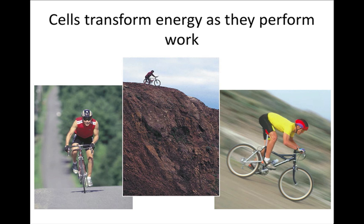Energy is defined as the capacity to perform work. Work is performed when an object is moved against an opposing force such as gravity or friction. There are two basic forms of energy: kinetic energy and potential energy. Kinetic energy is the energy of motion. Moving objects can perform work by transferring motion to other matter. Heat, or thermal energy, is a form of kinetic energy. An example of kinetic energy is a man biking down a hill, releasing thermal energy as the wheels rub against the floor, going against friction.